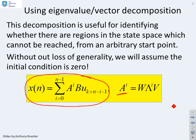I'm going to recognize that a to the power i can be written as the eigenvector matrix w times lambda to the i, where lambda is the diagonal matrix of eigenvalues, times v. Then I'm going to substitute that expression back into this summation.